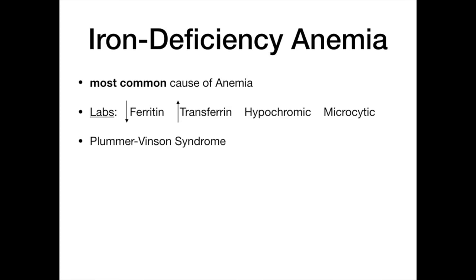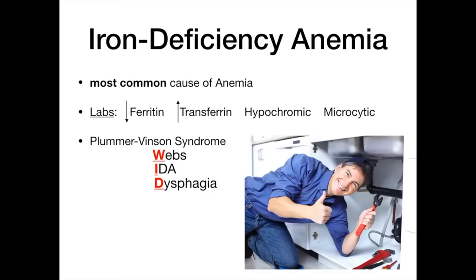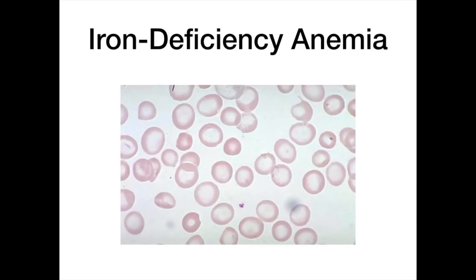A high-yield disease association is Plummer-Vinson syndrome — a triad of esophageal webs, iron deficiency anemia, and dysphagia. The mnemonic is WID: Webs, Iron deficiency, Dysphagia. The memory trick: 'plumber' sounds like 'Plummer,' and when do you need a plumber? When I Diarrhea — WID. The picture here shows hypochromia: slightly paler red blood cells because hemoglobin is not in its normal state. Compare this to a normal red blood cell and you'll notice the difference. That's iron deficiency anemia.